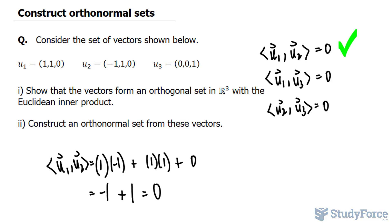Over here, let's do the same thing. So this time it's u₁ and u₃. One times zero is zero. Again, one times zero is zero. And zero times one is zero. So that is equal to zero. Another proof.